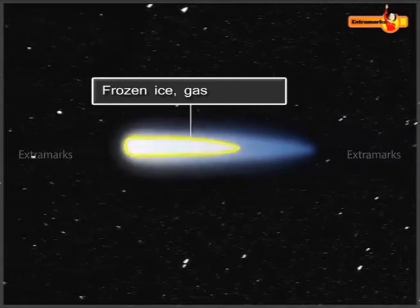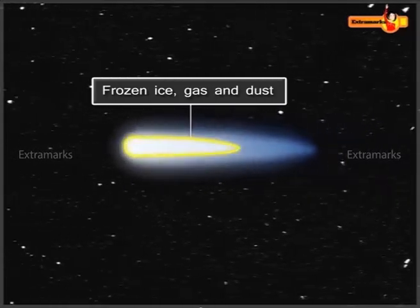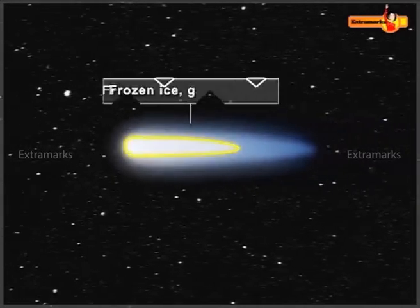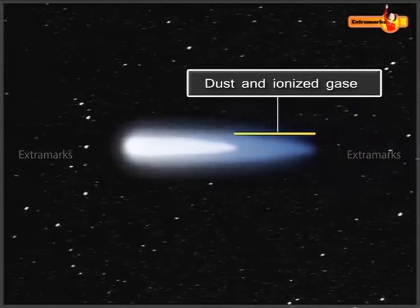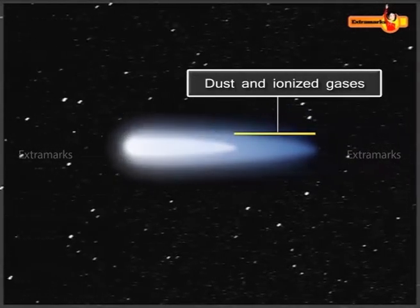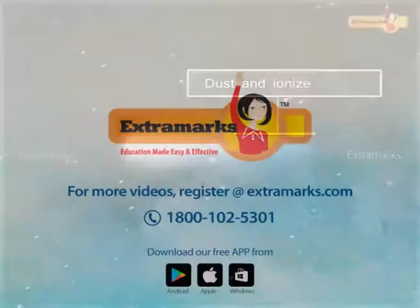It is made up of frozen ice, gas and dust. Its long tail is made up of dust and ionized gases. The tail develops when the comet is near the Sun.